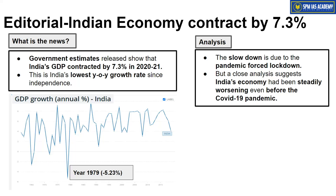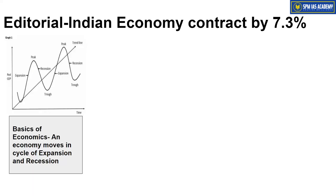The obvious reason for this poor growth rate is the COVID-19 pandemic. A very forceful lockdown was imposed across the country last year, and that stringent lockdown severely impacted economic activities — leading to the 2020-21 slowdown. However, this article argues that if we analyze more closely, Indian economy had already started declining slowly even before the COVID-19 pandemic started. Before understanding that analysis, let me briefly revise a basic economics concept: policy makers and central banks aim for stable economic growth.